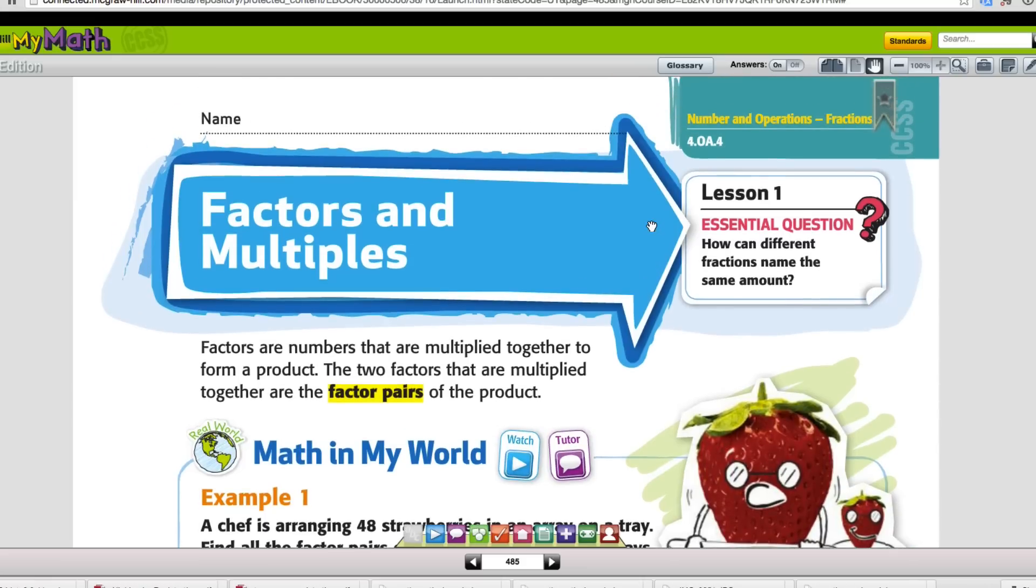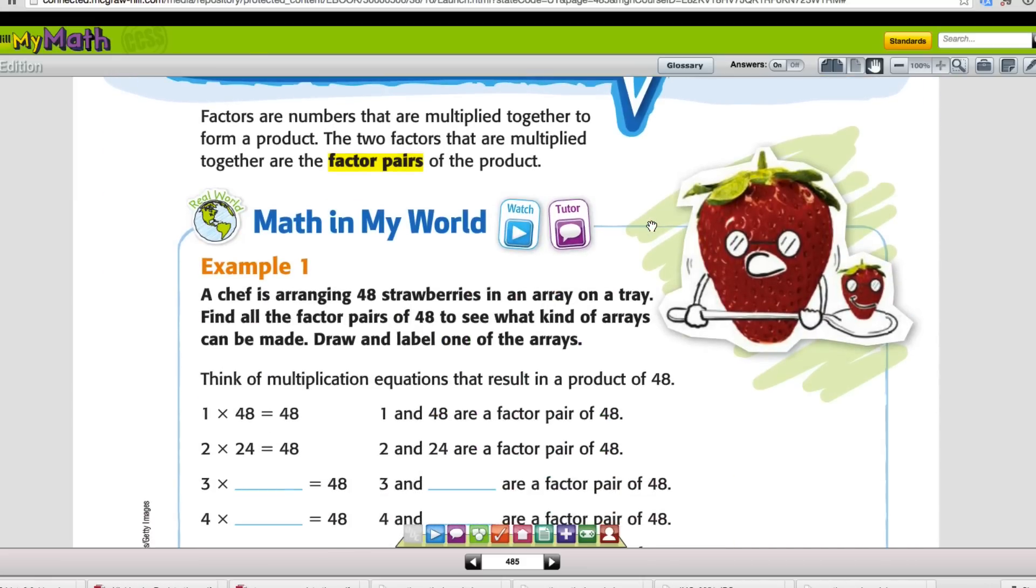Basically what that means is we look at this problem right here. 1 times 48 equals 48 and so 1 and 48 are the factor pair. Looking at the next one, 2 times 24 equals 48 and so 2 and 24 are also a factor pair for 48.